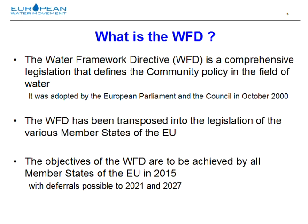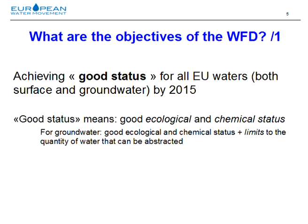The Water Framework Directive has four objectives. The first objective is to achieve the good status of water all over European territory by 2015. The notion of good status is defined very broadly and it means both ecological status — referring to the quantity and quality of life living in the water — and chemical status, which refers to the presence of certain chemical pollutants in the water.